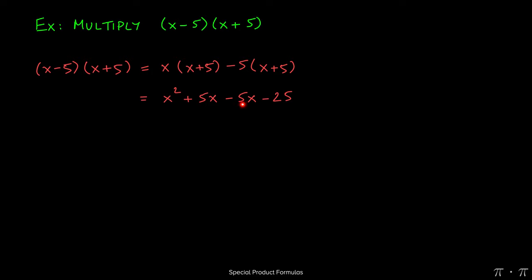Here we notice that when we combine like terms, these two terms will cancel each other out, one being a positive and the other being a negative, leaving behind just x squared minus 25.